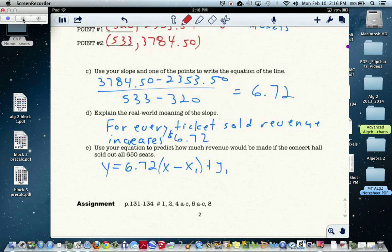So you should be able to pick any one of your points, so let's just use one of them that we used up top. I can put 37... oh, sorry, 3784.50, that's the y value of that point, will be 6.72 x minus 533.